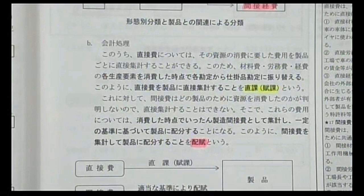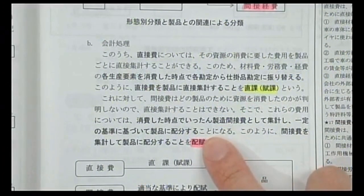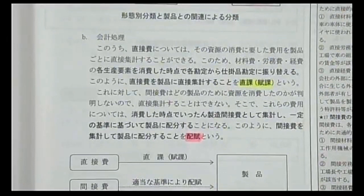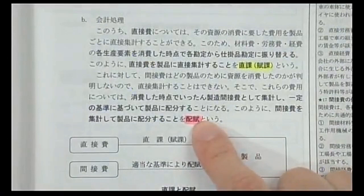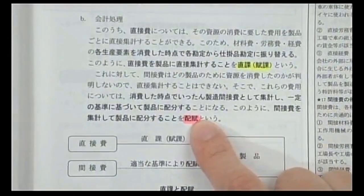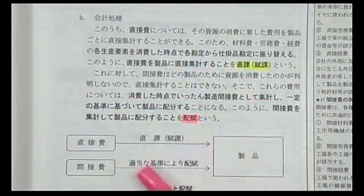直課とは自分が食べた定食の料金を自分で負担するようなイメージです。配賦とは割り勘のイメージで、何かを基準にして割り振ることです。10人で1万円の食事をして1人1000円ずつ負担するのが配賦計算です。原価計算のポイントはこの配賦をいかに正確に行うかです。